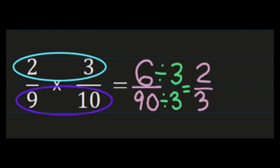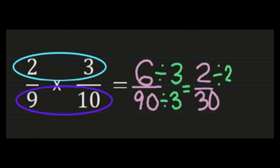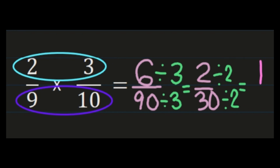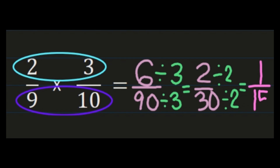I need to ask myself, am I done simplifying? Well, looking at 2 thirtieths, 2 and 30 are both even. So I can continue simplifying. I'll divide my numerator by 2 and my denominator by 2. 2 divided by 2 is 1, and 30 divided by 2 is 15. So my final answer is 1 fifteenth.